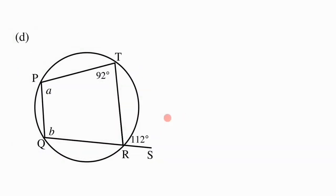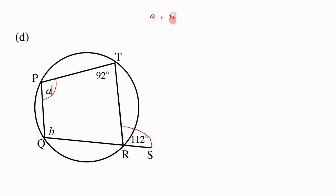Moving to part d, we need to find missing values a and b. For a, we can see it is an interior angle of a cyclic quad which should be equal to the exterior angle of the cyclic quad. So a equals 112 degrees — exterior angle of cyclic quad.